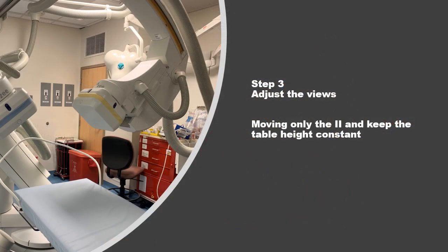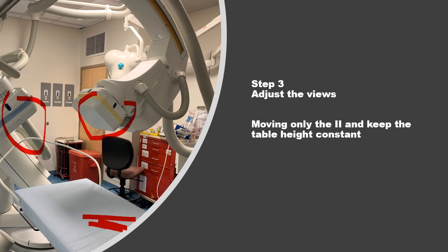Then we move to step three, which is adjusting our views and doing the coronary angiography. We do that by only moving the image intensifiers, and we have to make sure that the table height remains constant. The views are usually orthogonal to each other — so if we are doing RAO caudal, for example, we have to do an LAO cranial on the other view.